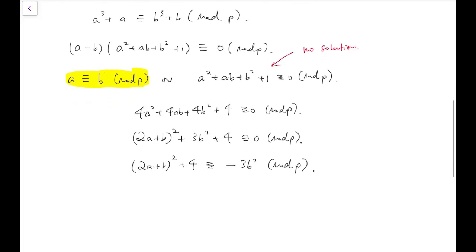So, on one side, I have some square plus 4, and on the other side, I have -3b² mod p. At this stage, the right-hand side is easier to consider. Remember, we have to force this part to have no solution. But the question is, is this even possible?